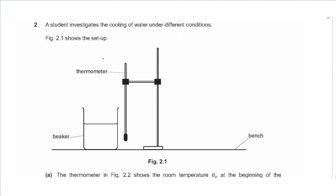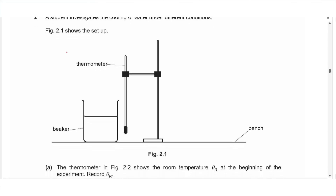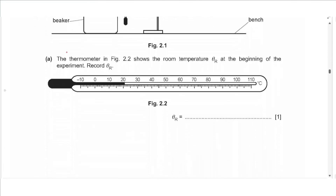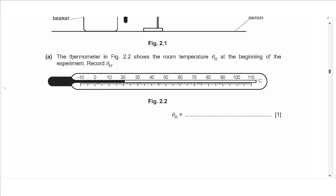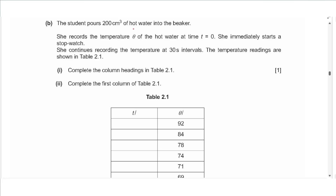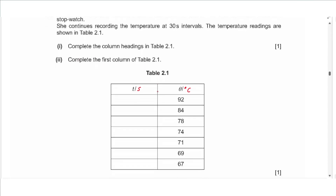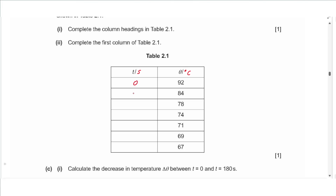Question 2 says a student investigates the cooling of water under different conditions. Figure 2.1 shows the setup with a thermometer next to a beaker. The thermometer in figure 2.2 shows room temperature theta-r at the beginning of the experiment. Record theta-r: this is one division after the 20 mark, so 21 degrees Celsius. Part b: the student pours 200 cm³ of hot water into the beaker, records the temperature at time t equals zero, starts a stopwatch, and continues recording at 30-second intervals. Complete the time column: 0, 30, 60, 90, 120, 150, 180.